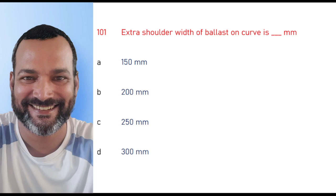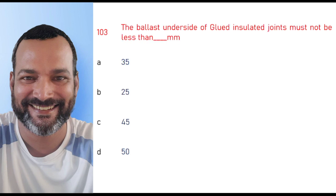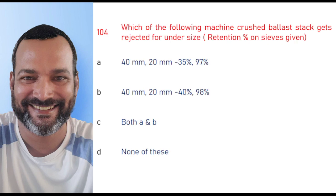Welcome to the sixth part of this video series. Extra shoulder width of ballast on curve is 150 mm. Side slope of formation in embankment should be kept normally as two is to one. The ballast under the side of a glued insulated joint must not be less than 50 mm.